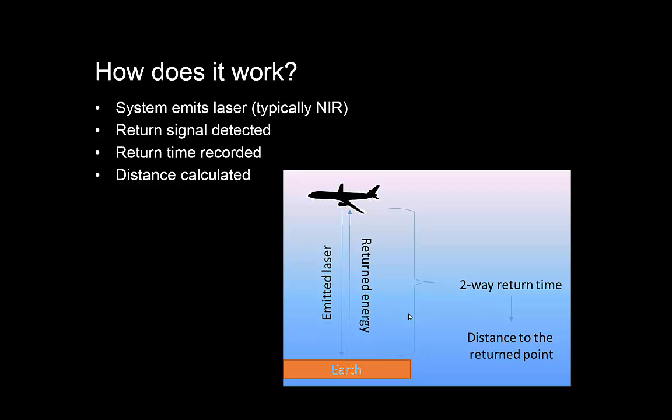So how does it work? Basically, the system on board the airplane emits a laser in an optical or near-infrared wavelength. On land, typically that would be near-infrared, and then it measures what comes back from the surface.